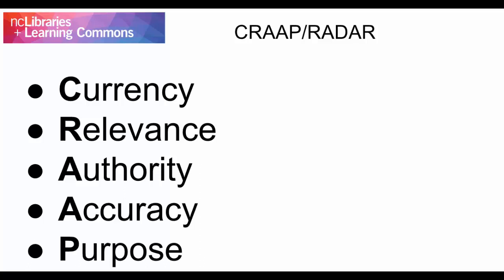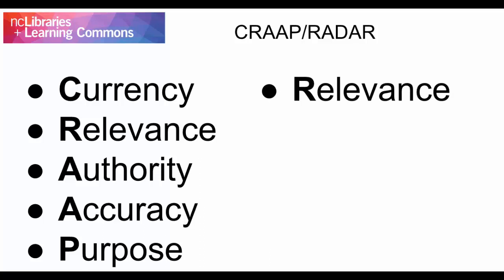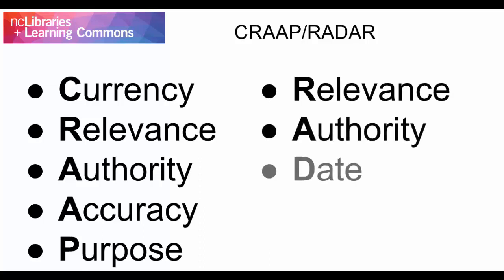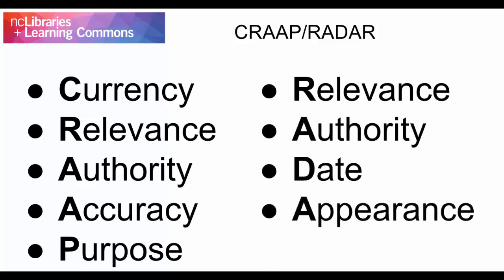RADAR is another tool you can use. The information is essentially the same, just presented in a different order. R is for relevance, A is for authority, D is for date, A is for appearance — this refers to questioning unprofessional-looking sites that are full of ads, but remember, looks can be deceiving — and R is for reason, which refers to the purpose or motivation behind the website.